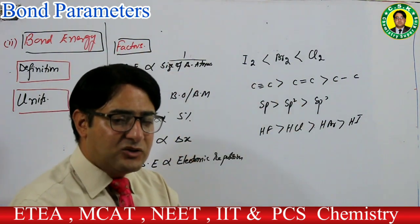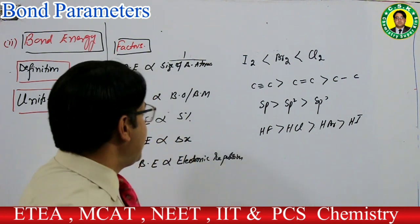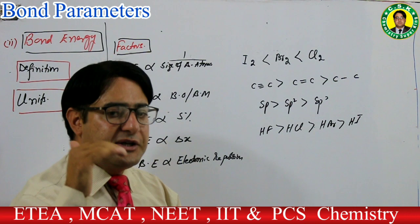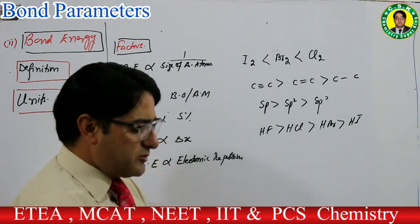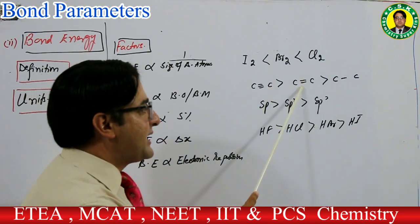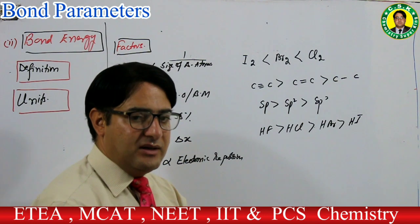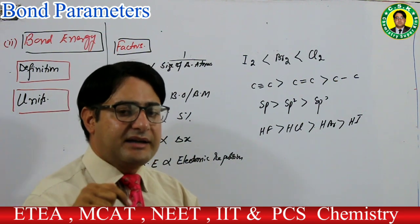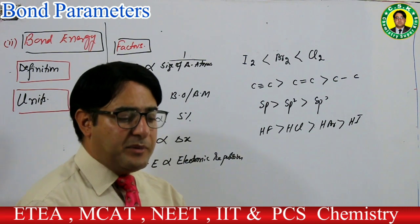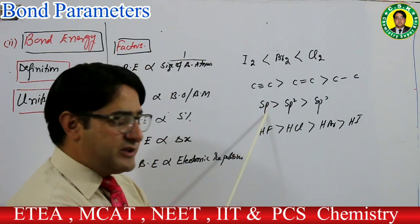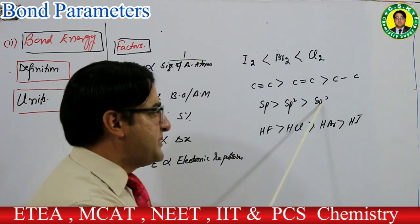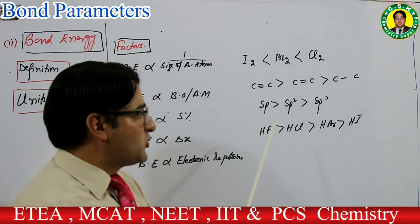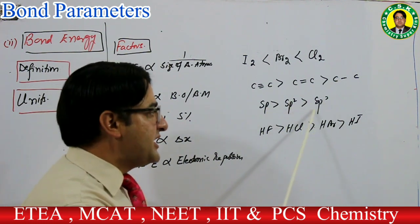دوسرا factor — bond order۔ جتنا bond order زیادہ ہوگا اتنا ہی bond energy زیادہ ہوگی۔ Carbon-carbon triple bond کی bond energy زیادہ ہے double bond کے مقابلے میں، جو کہ single bond سے زیادہ ہے۔ تیسرا factor — percent s character۔ Bond energy اور percent s character کا direct relation ہے: sp میں 50%، sp2 میں 33%، sp3 میں 25% — sp hybrid orbital سے بنے bond کی bond energy سب سے زیادہ ہوگی۔